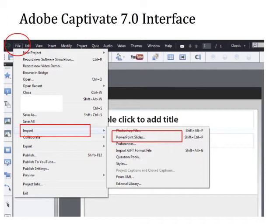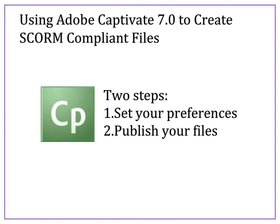Once you have developed the contents of your presentation, you are ready to publish or export your entire learning module to the SCORM-compliant format. By doing this, you will create a group of files that your learning management system can use and understand. There are only two steps in Adobe Captivate: setting your preferences and then exporting or publishing your final project.